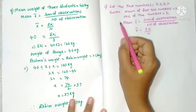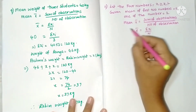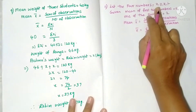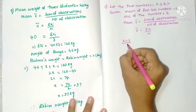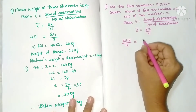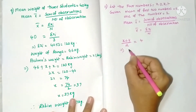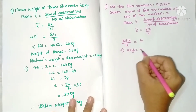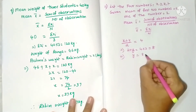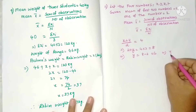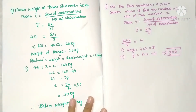Let the four numbers be x, y, z, t. The mean of the first two numbers is 4, and one number is 2. So x plus y by 2 equals 4, and since one number is 2, we have 2 plus y equals 8. Therefore y equals 8 minus 2, which is 6.